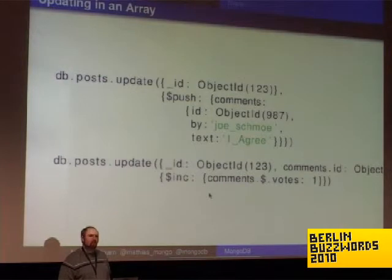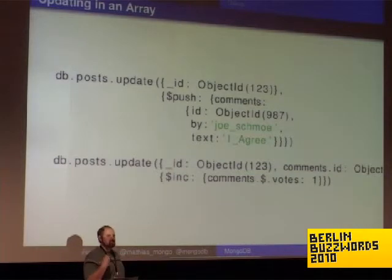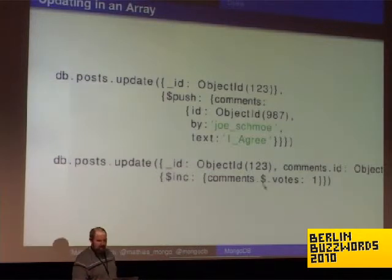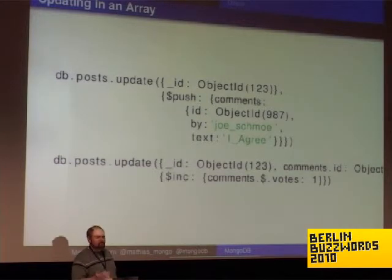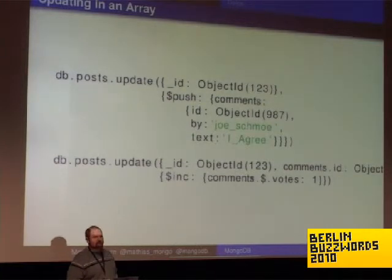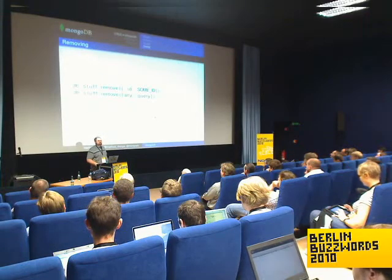Recently added in 1.4: if you have an array of comment objects and want to allow voting on them, previously you had to do a fetch, modify, and store. We added the dollar positional operator. You include a query on the array element in the query portion of the update, and then whatever part of the array matches will be updated by your updater. So you can increment votes or change various stats.